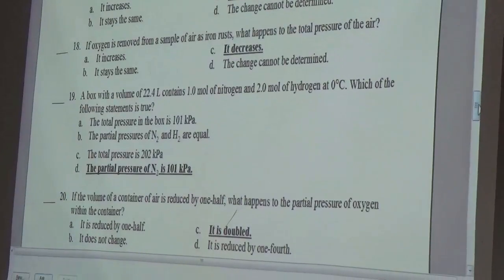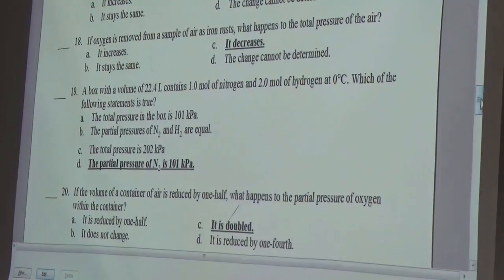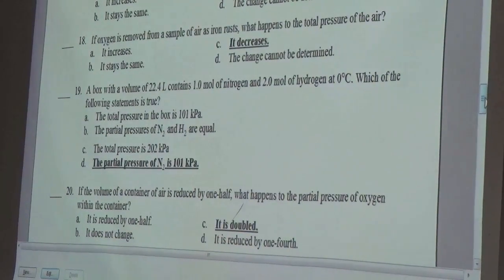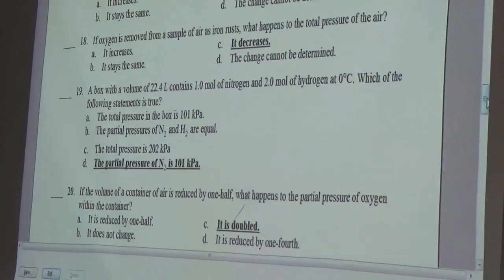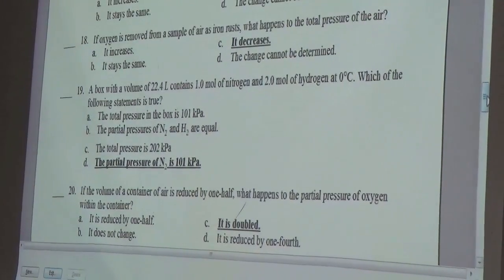A box with a volume of 22.4 liters contains one mole of nitrogen and two moles of hydrogen at zero degrees Celsius. Which of the following statements is true? D.